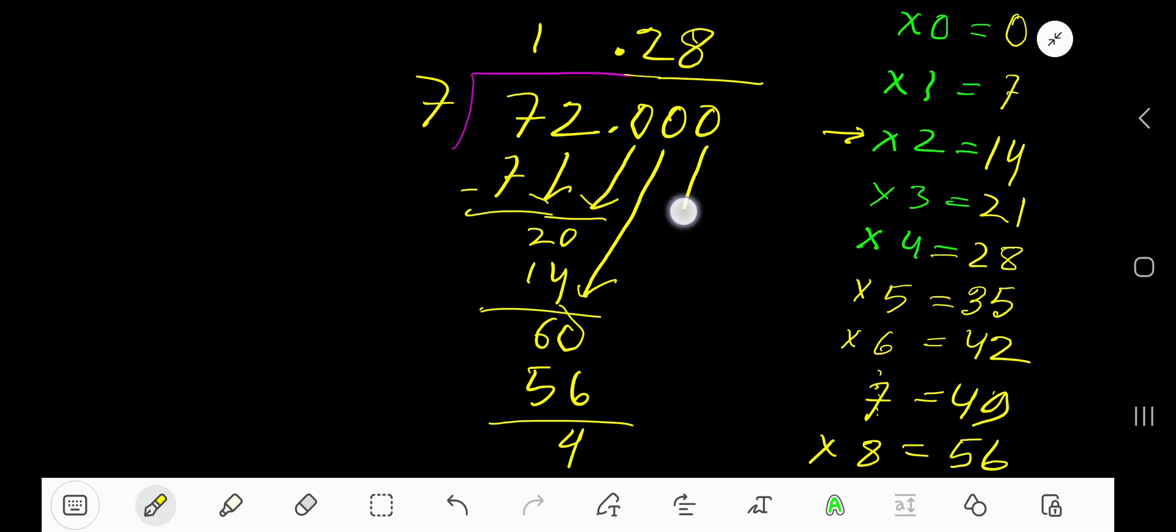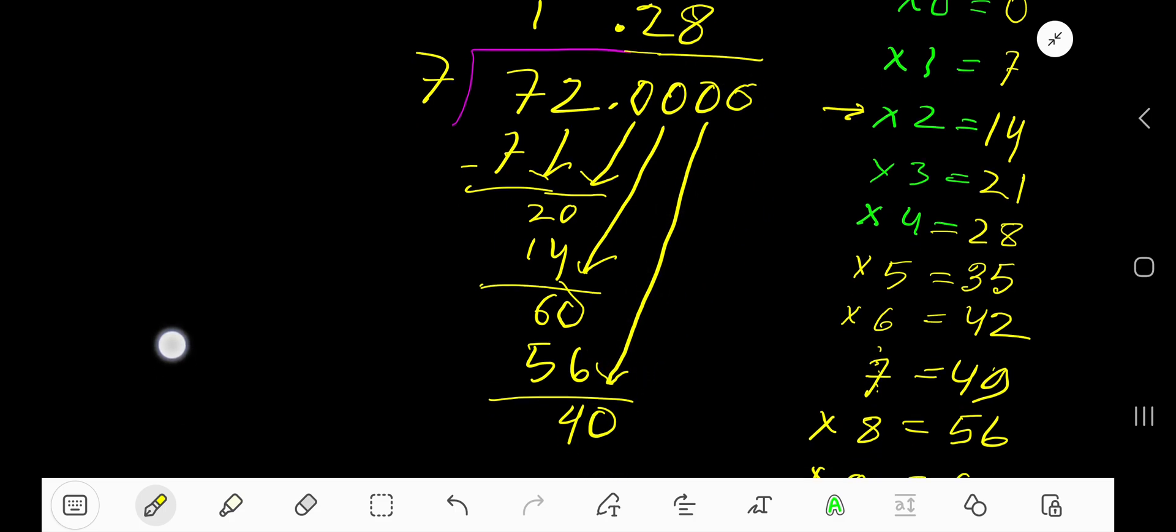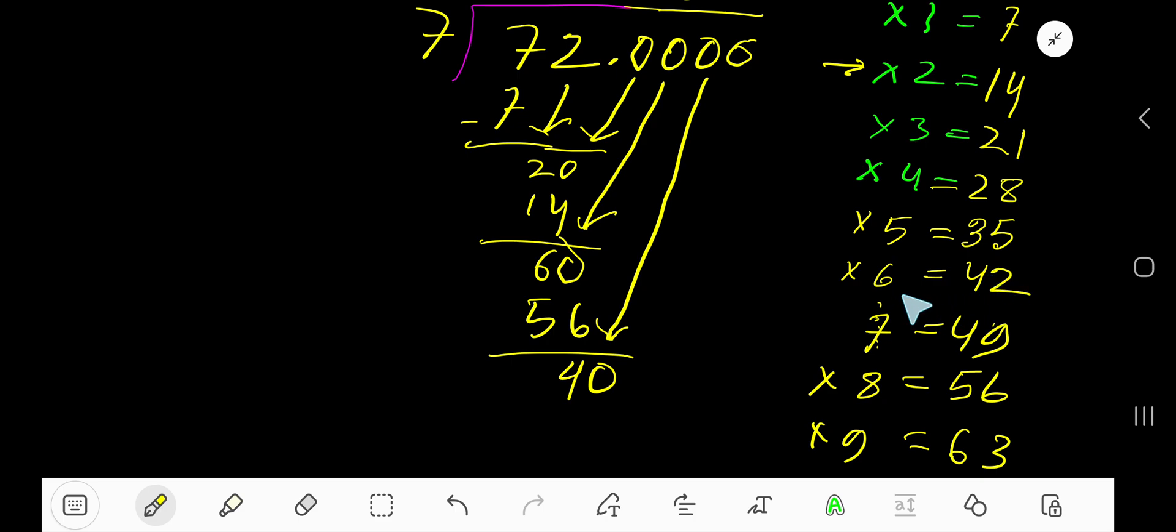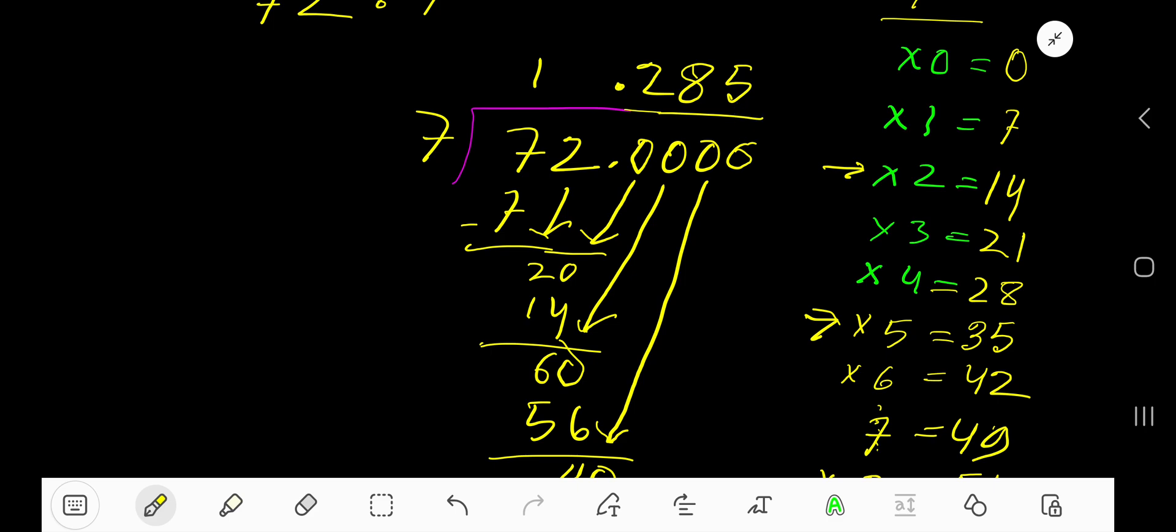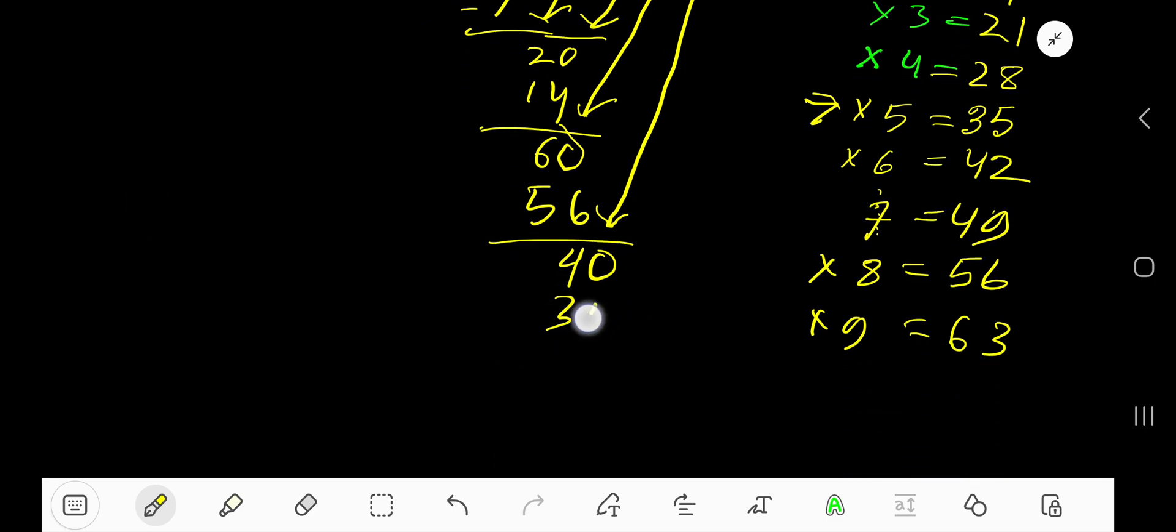6 times 7 is 42, which is too much, so 5 times. Write 5. 5 times 7 is 35.